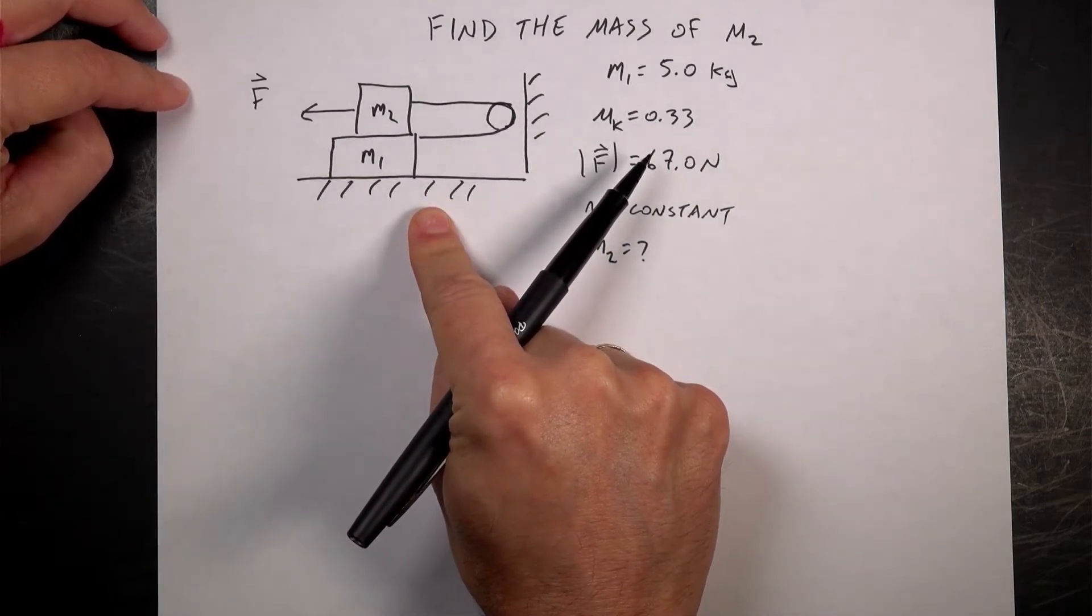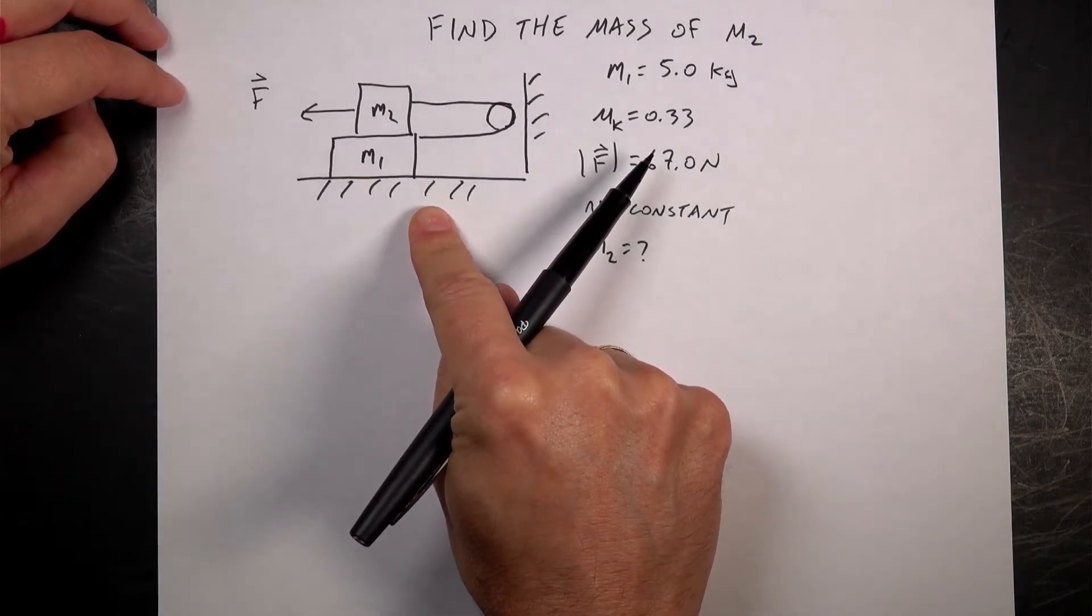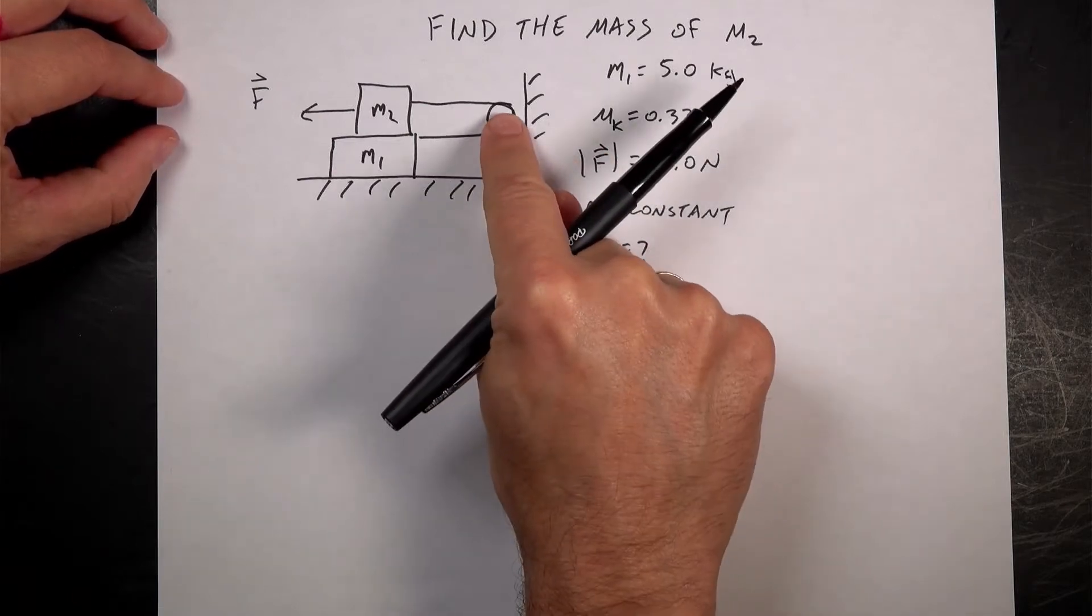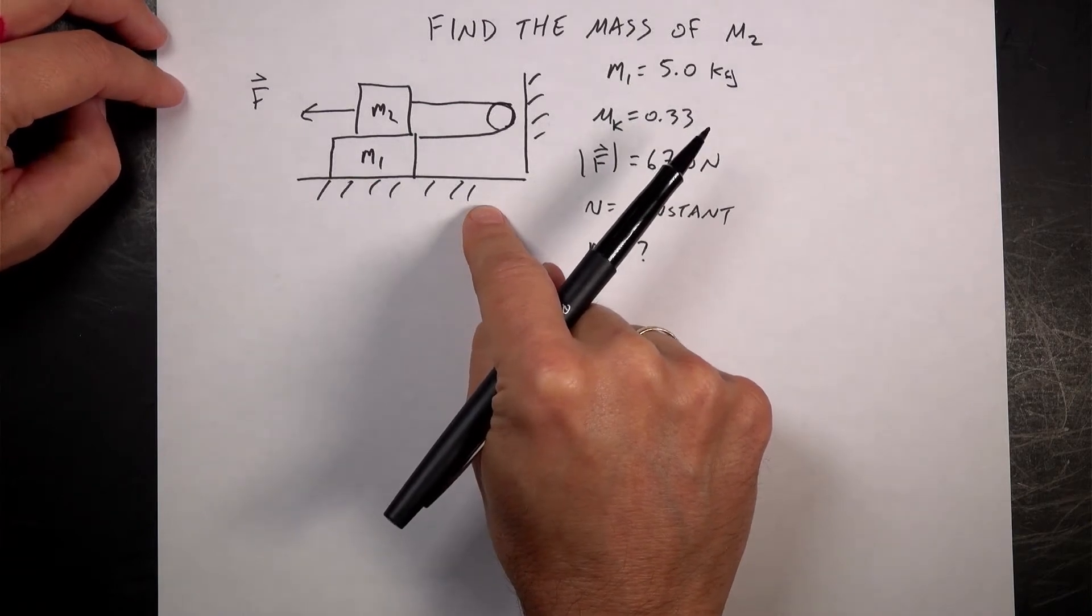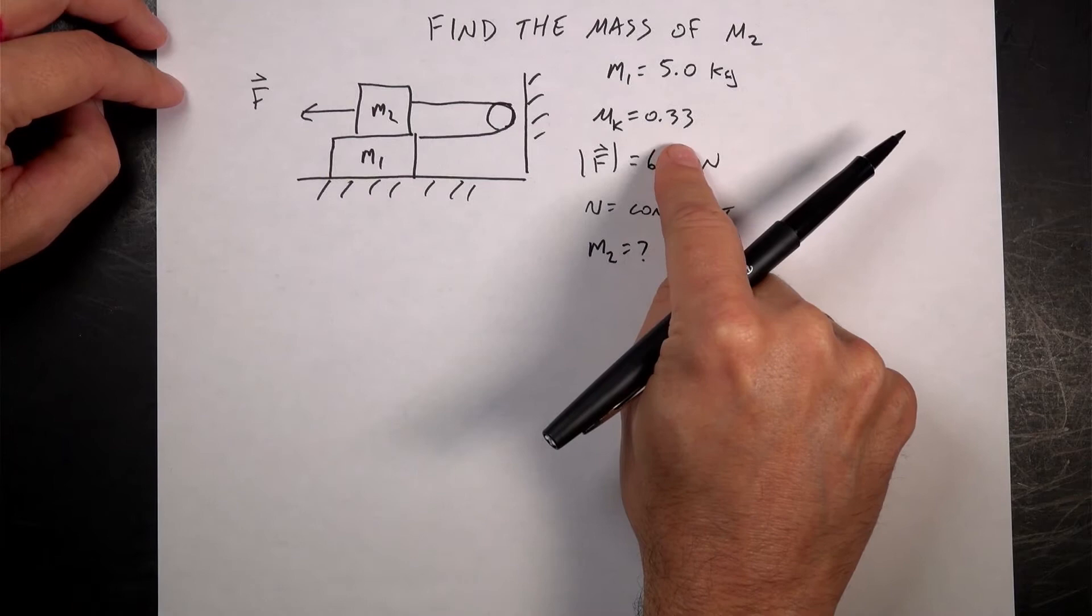A light string passes over the frictionless pulley. It connects two blocks. The coefficient of kinetic friction mu k at both surfaces is 0.33. I wrote down this stuff.